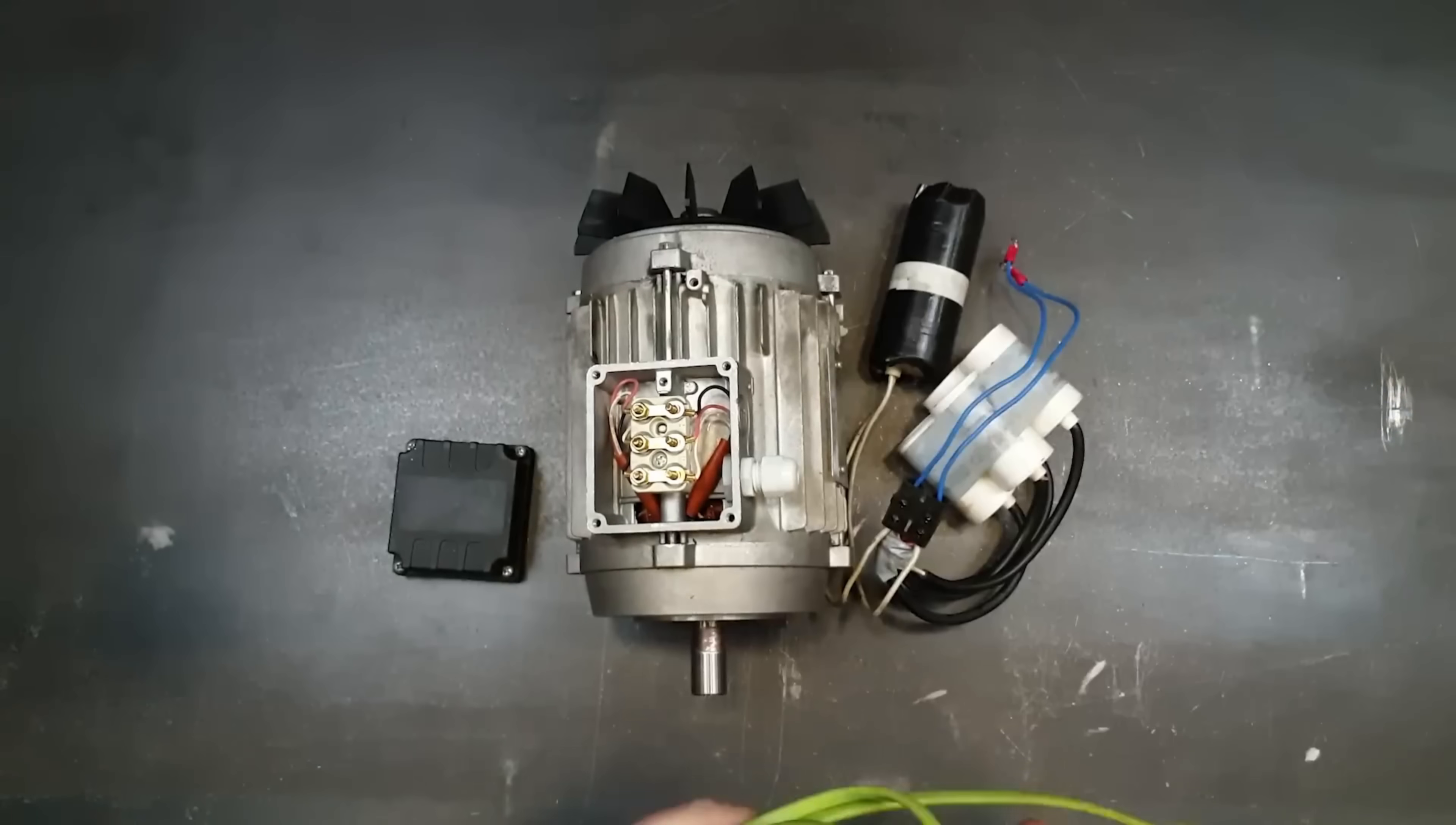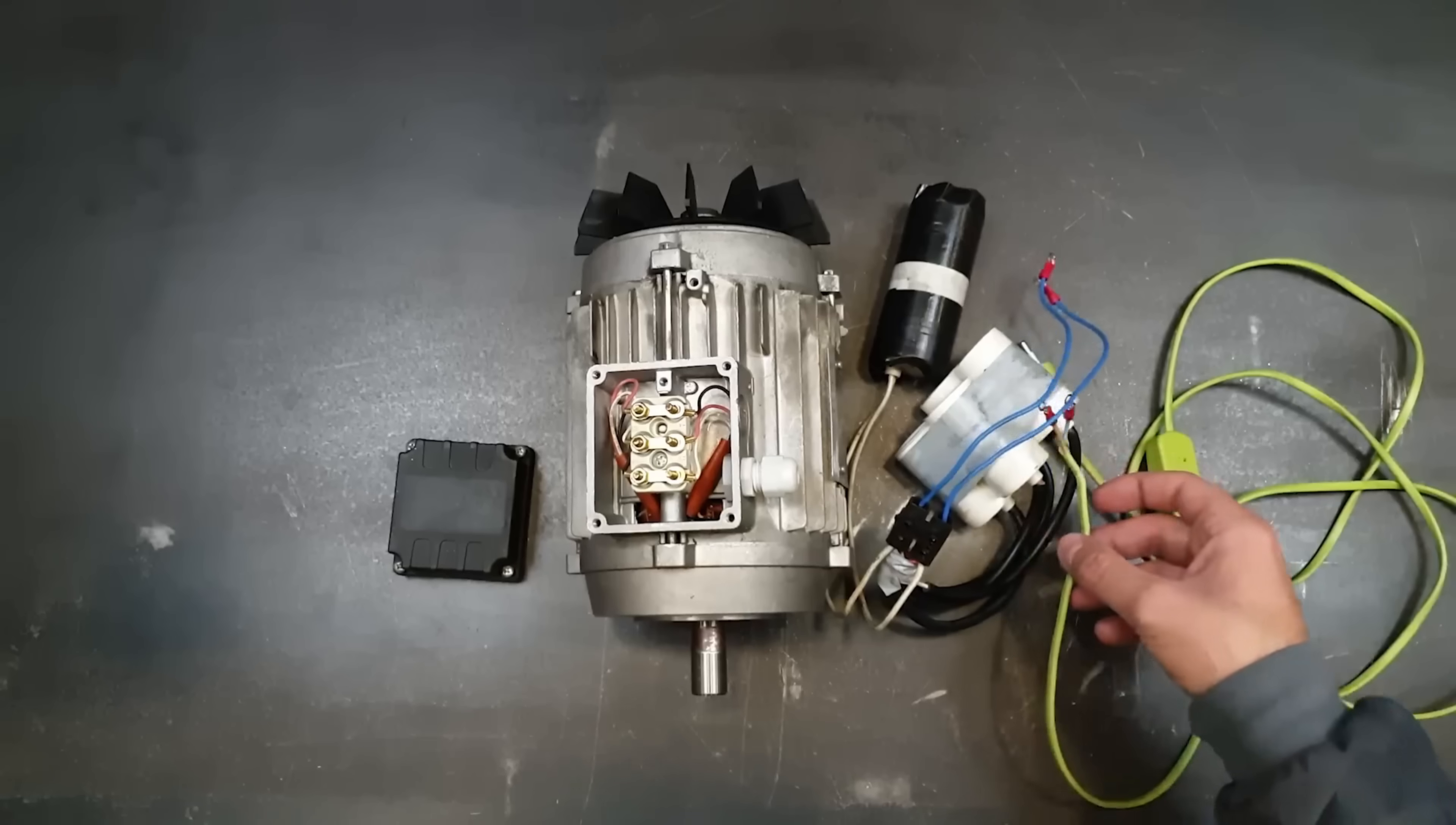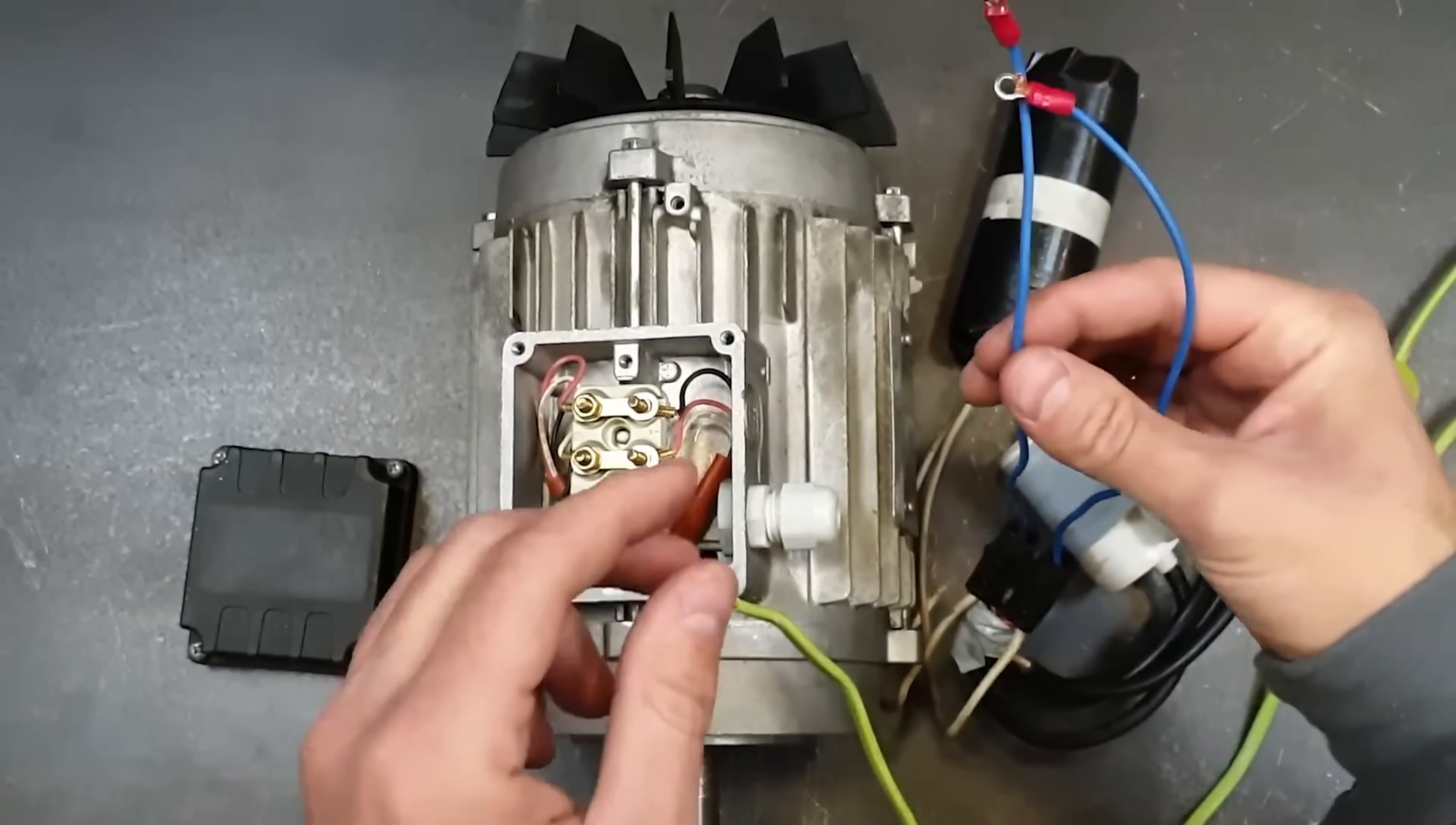If we ignore the losses, a generator produces electrical energy by, simply put, slowing down the motion. So that a motor stops running without a constant energy supply, so the motor has to produce more and more kinetic energy.